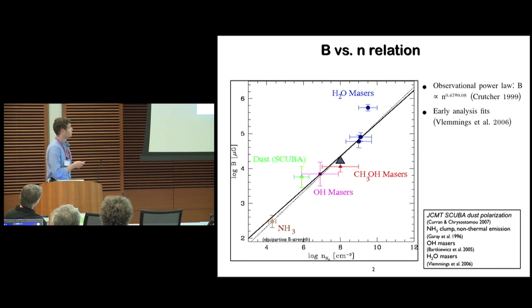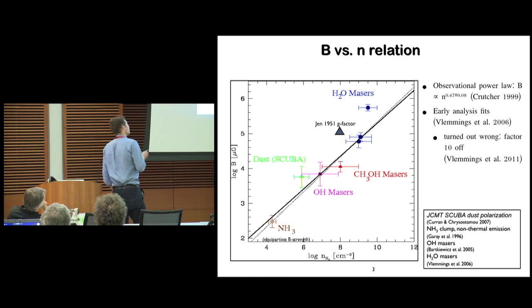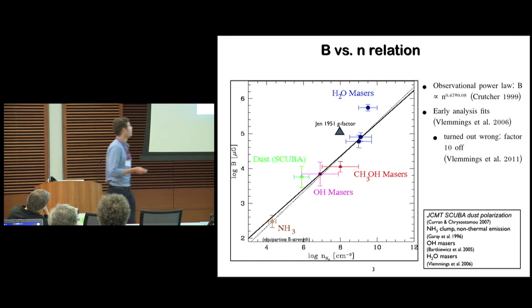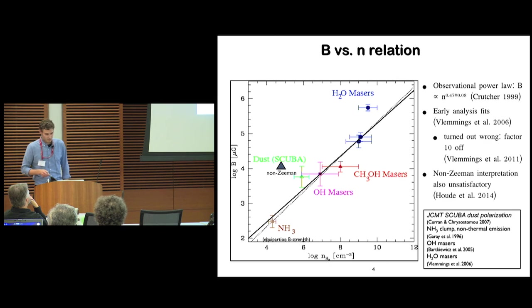These are analysis from 2006, and in 2011, Wouter Vlemings, my supervisor, decided to use the right data. He made an error, and it came out that the magnetic field strength, based on the analysis, was ten times too strong. So that didn't work out very well, and also interpretation of the polarization spectra from non-Zeeman polarization effects isn't quite satisfactory in determining the magnetic field.